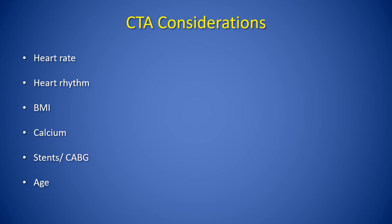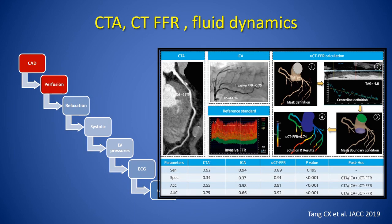Fractional flow reserve testing can be added to CT angiography and can be very helpful in intermediate test results where there is not enough calcium to obscure the exam, but just enough to impair our ability to determine functional significance. Intermediate disease can be adjudicated in CTA if CT FFR testing is added on, and we do use this at our facility.